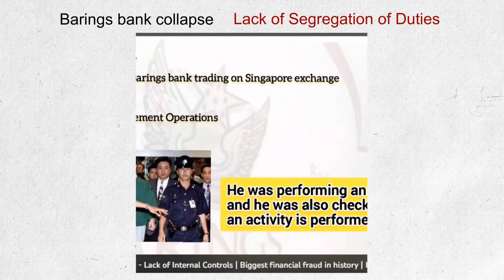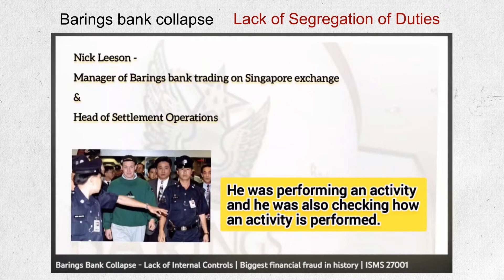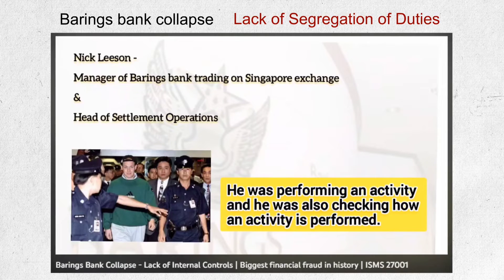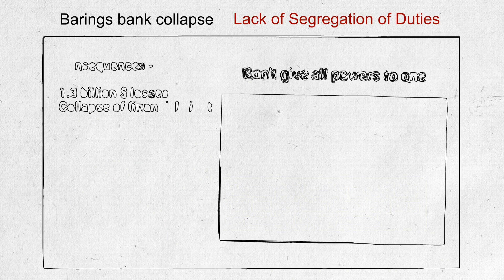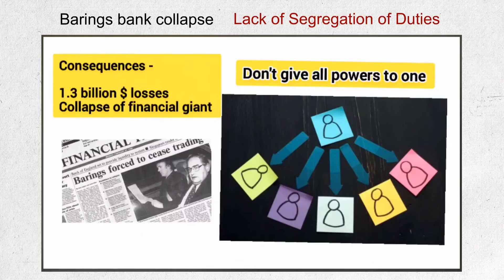The individual involved was Nick Leeson, who was manager of Barings Bank trading on the Singapore International Monetary Exchange and at the same time the head of settlement operations, meaning he was also in charge of accurate accounting. He was performing the activity and also checking how the activity was being performed. Those positions would normally be held by two different persons. The consequences, as we all know, were 1.3 billion dollars in losses and the collapse of Barings Bank.